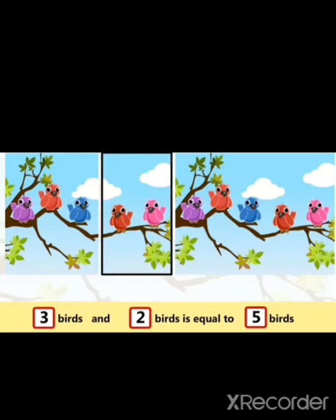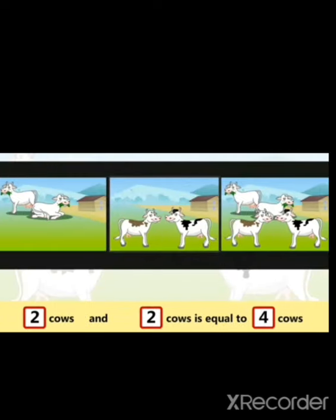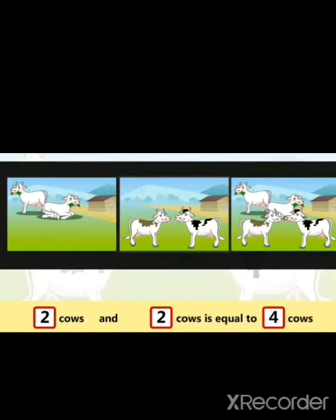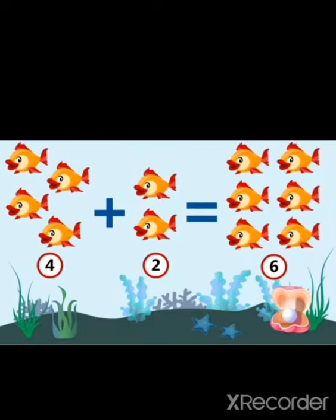Let us take an example. 3 birds and 2 birds is equal to 5 birds. 2 cows and 2 cows is equal to 4 cows. 4 fish and 2 fish is equal to 6 fish.